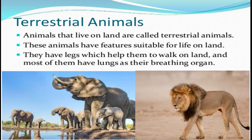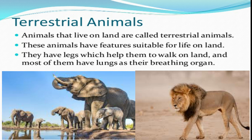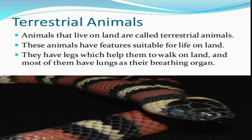Let's see adaptations in terrestrial animals. Terrestrial animals like elephants, lions, tigers, dogs, and cats have legs to walk or run on land, and also they have lungs to breathe. They have well-developed sense organs and nervous systems so they can feel changes in their surroundings. Some animals like snakes don't have legs, so they have scales on their body which help them to crawl on land. They are also terrestrial animals.